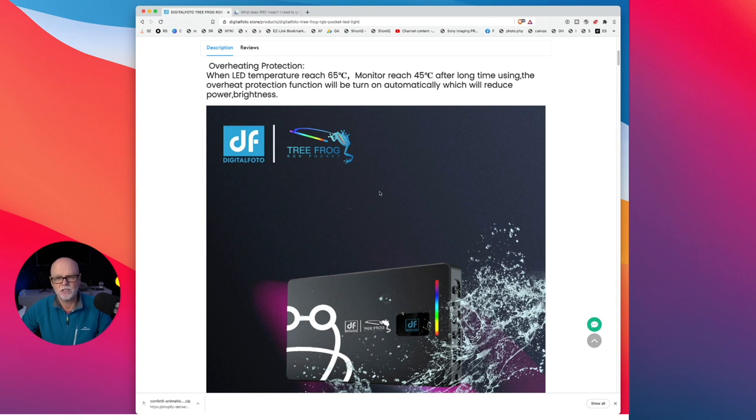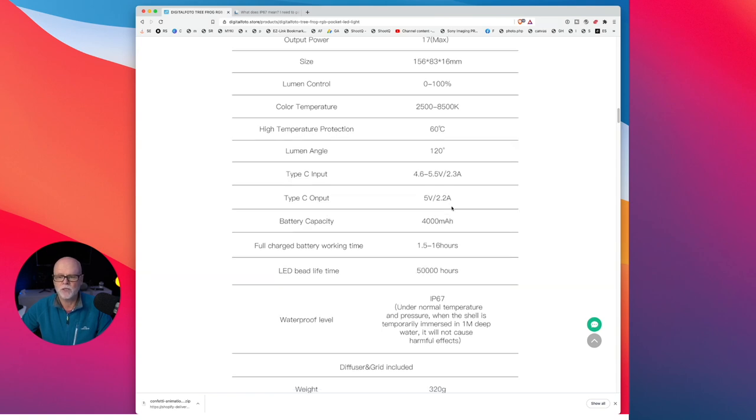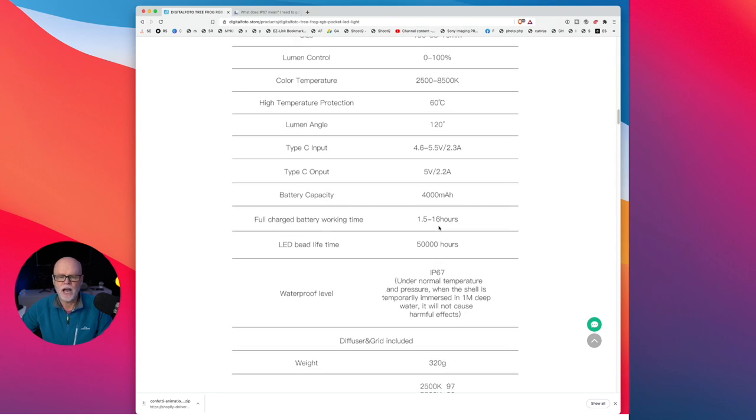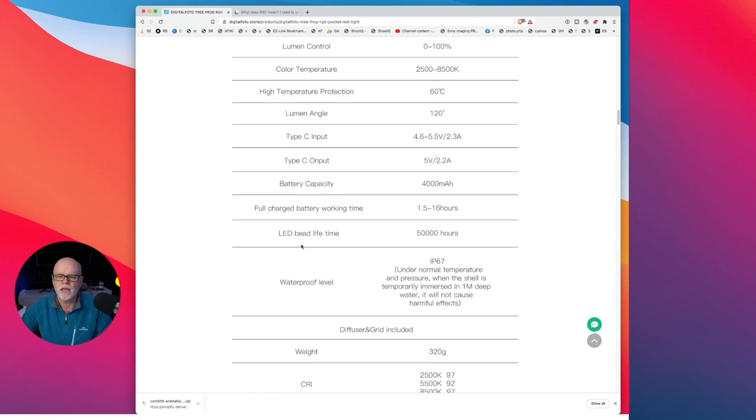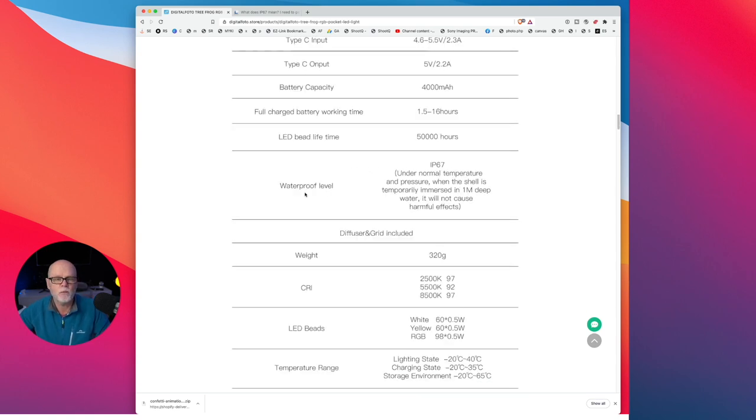Now high temperature protection: it does say up here that it will basically power itself down a little bit if it does reach 65 degrees. So that's sensible because if it was working under extremely hot conditions it will power down when it reaches 65 degrees. The type C input is 4.6 to 5.5 volts, 2.3 amps. The output is 5 volts at 2.2 amps as well.